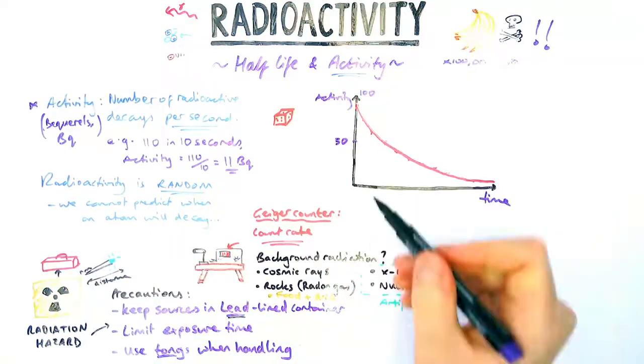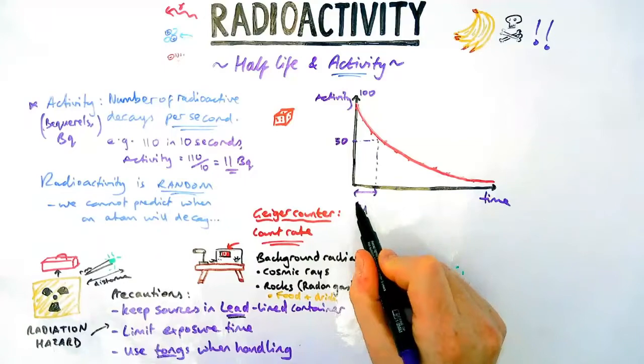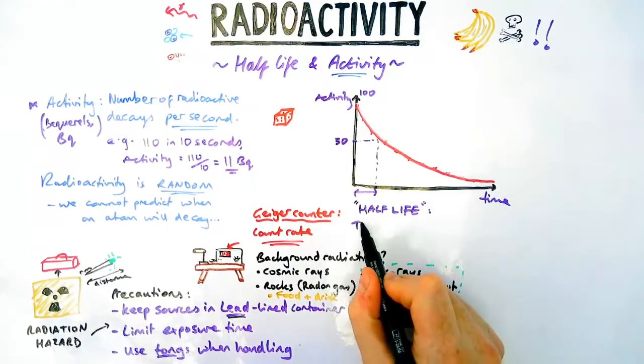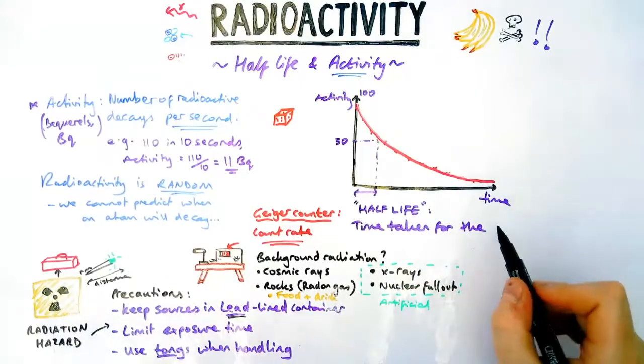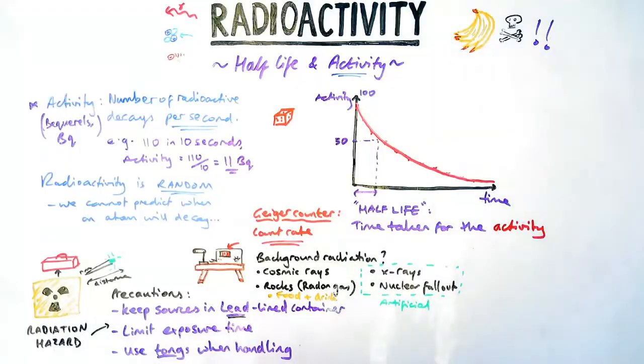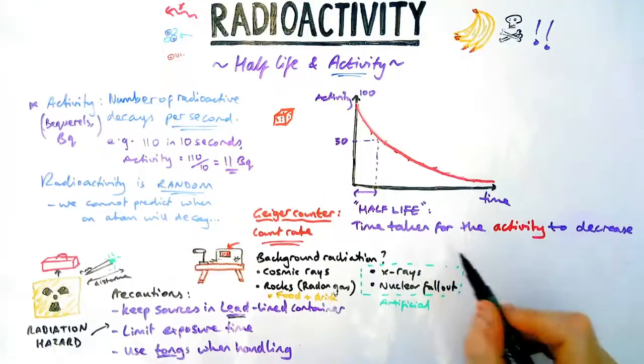Now let's put some numbers on this. Let's say the activity started at a hundred. Now the time taken for it to go down to 50 we can measure, and that's known as the half-life. So the half-life of a source, in words it is the time taken for the, in this case, the activity to decrease by half or to go down by half.